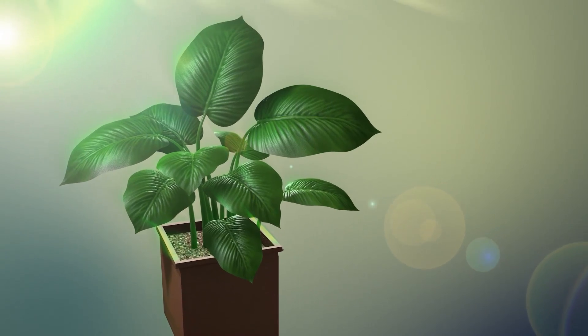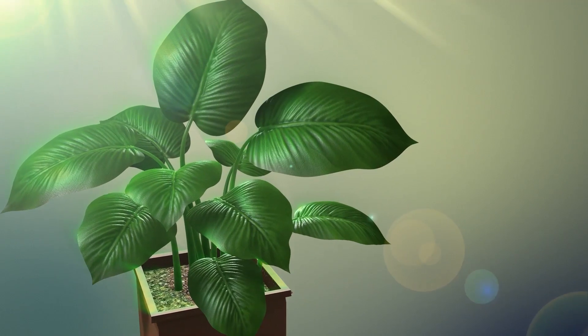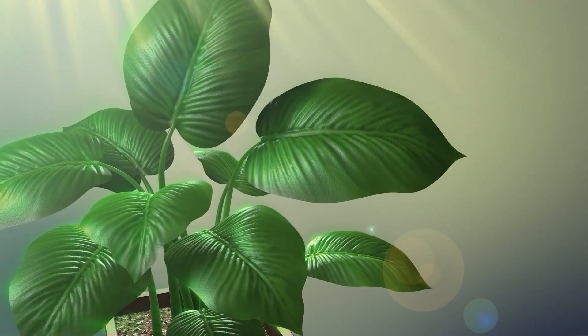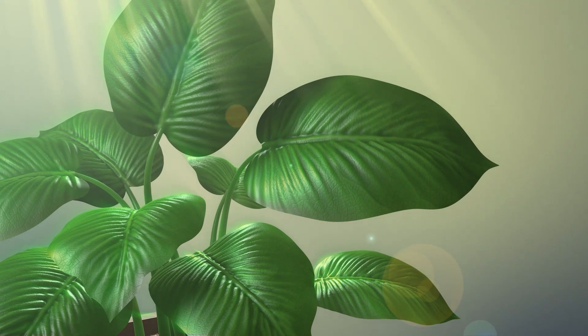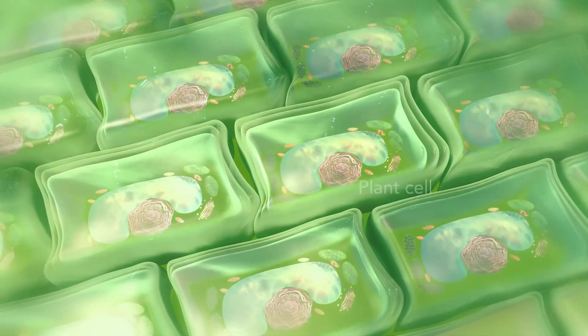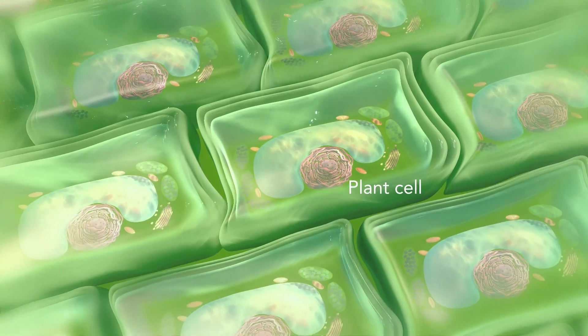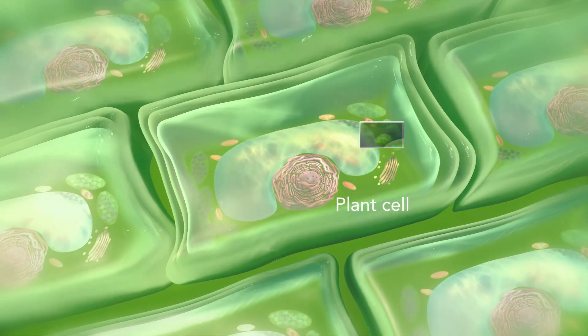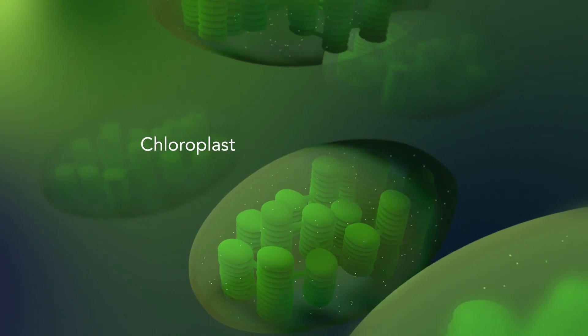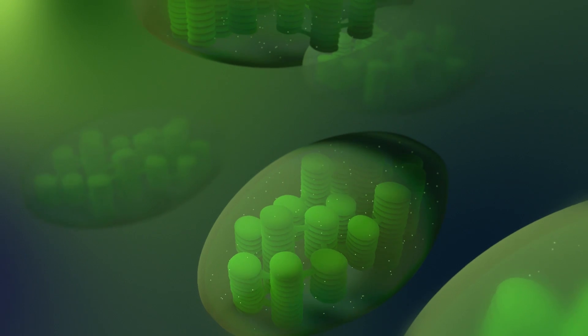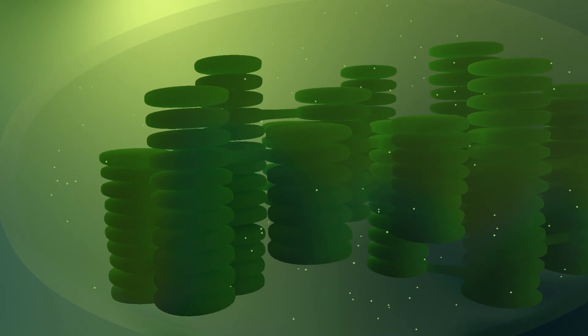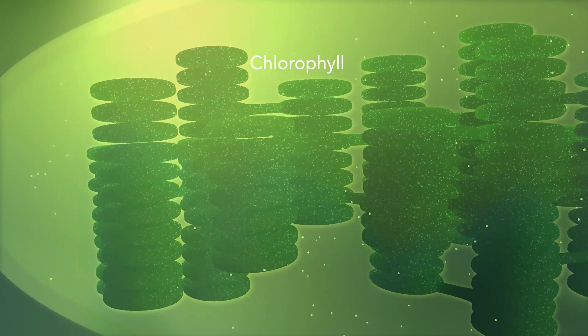Now, some organisms, such as plants, that are photo-autotrophic, meaning they capture sunlight for energy, have cells with an organelle called a chloroplast. The chloroplast is where photosynthesis happens. It's green because it has a green pigment called chlorophyll.